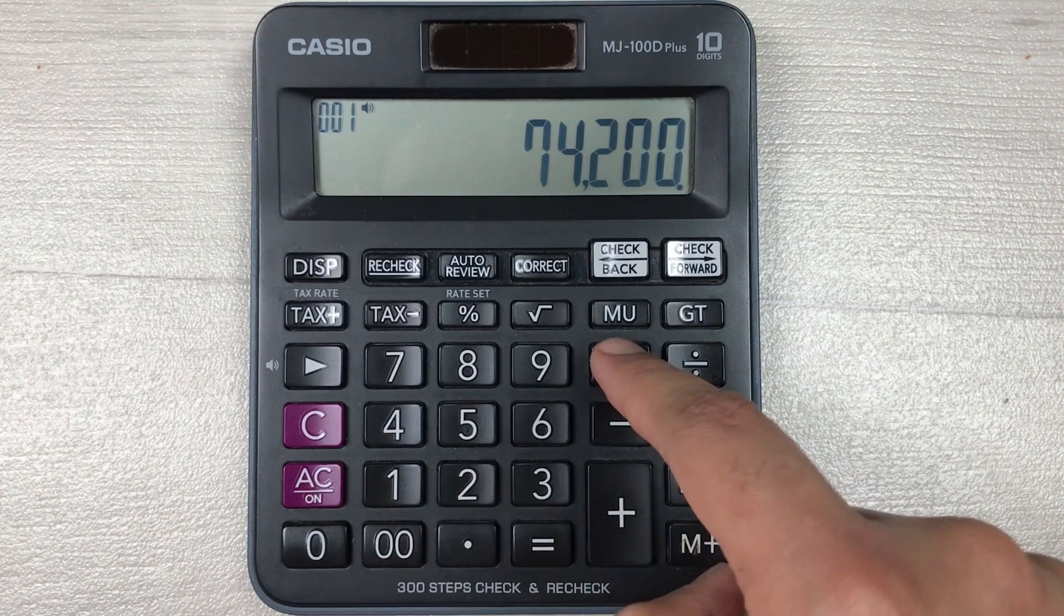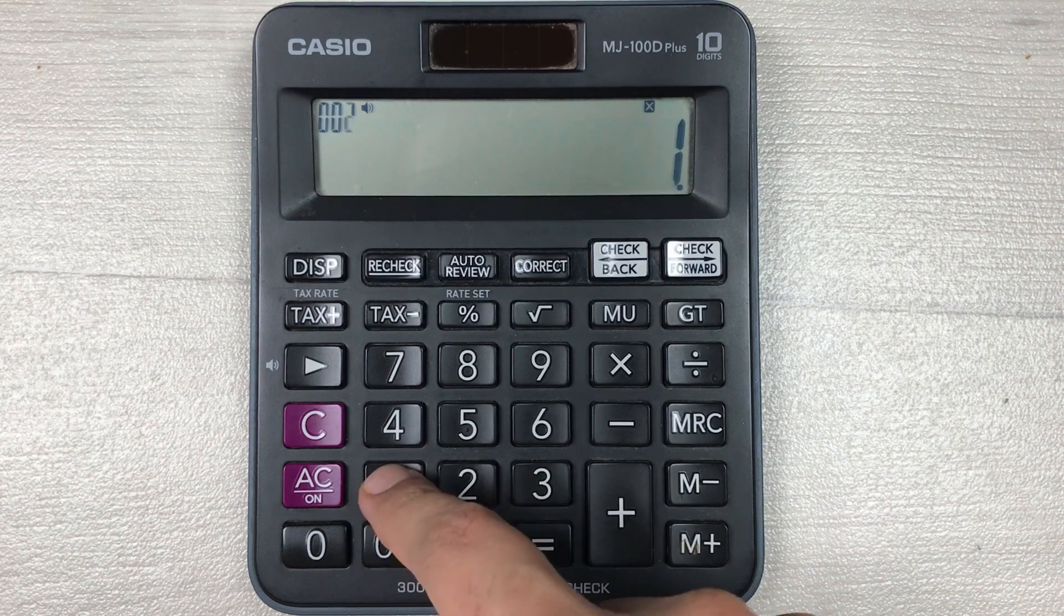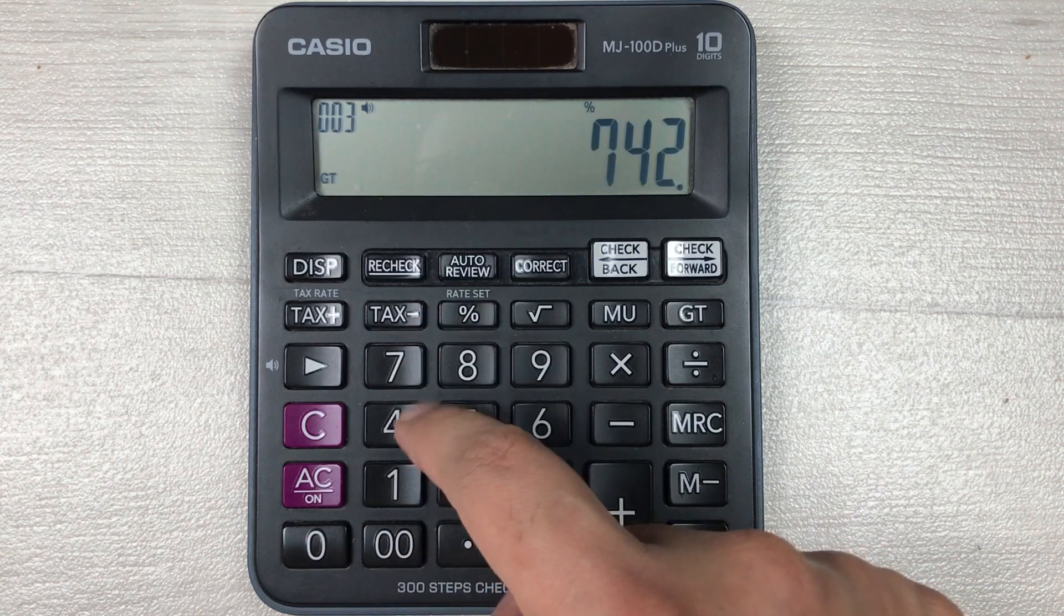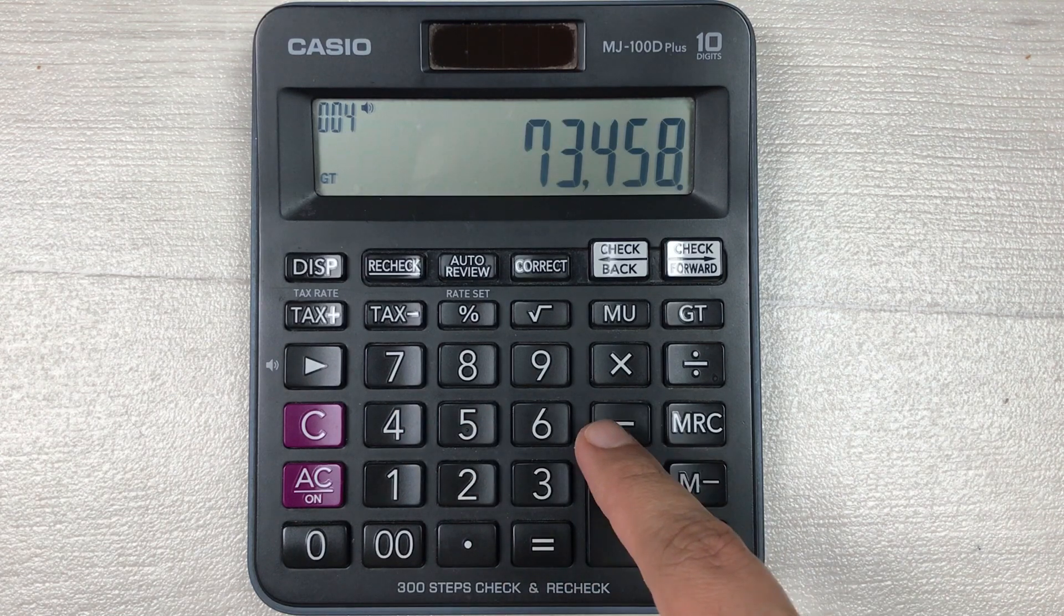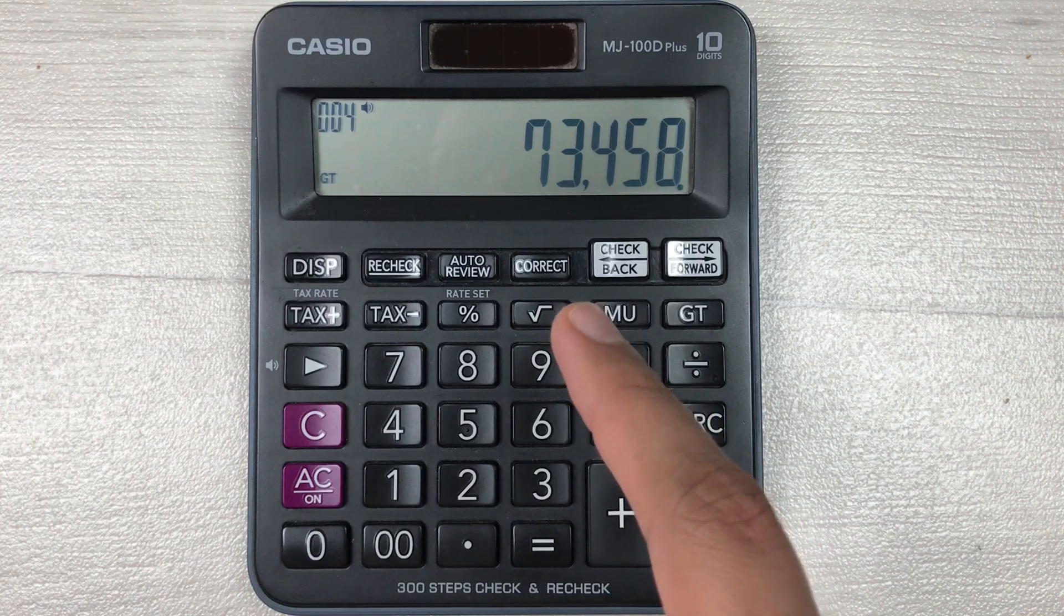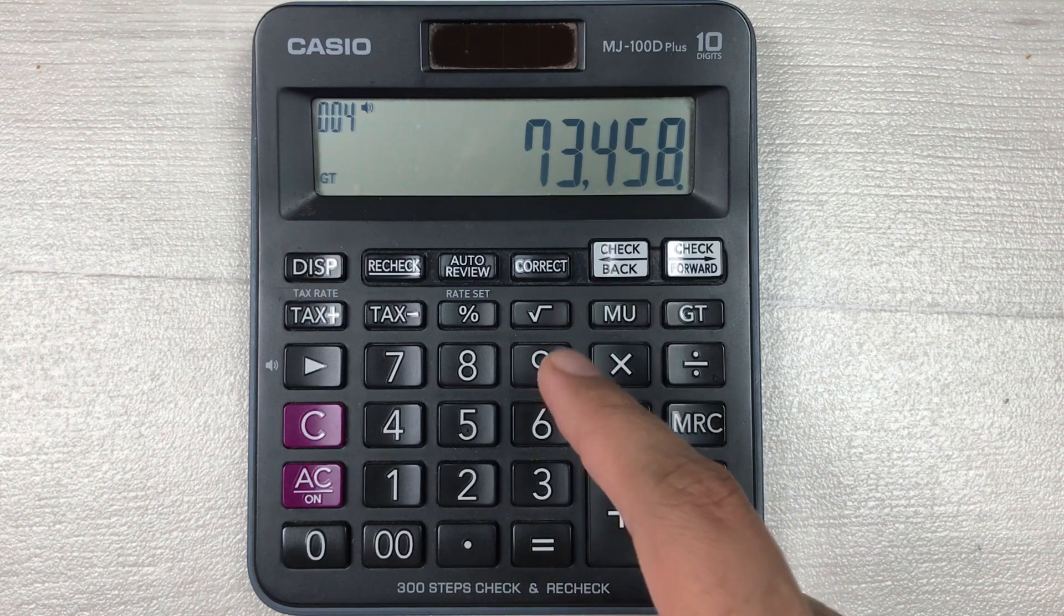You have to multiply it with 1, then you have to press this percentage button, and then in the last you have to press this minus button. Here is the final answer: 73458 is the final price after 1% off.